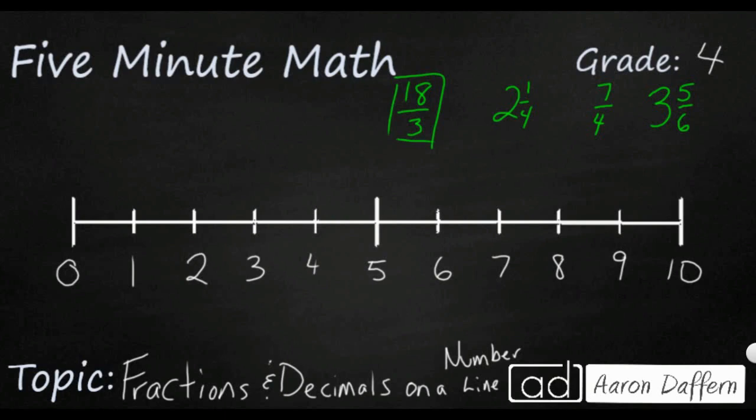Well let's start with 18 thirds. So 18 thirds is an improper fraction and we call it that simply because the numerator, which is 18 in this case, is larger than the denominator so that's an improper fraction. For us to be able to put this on the number line we need to turn it into a mixed number.